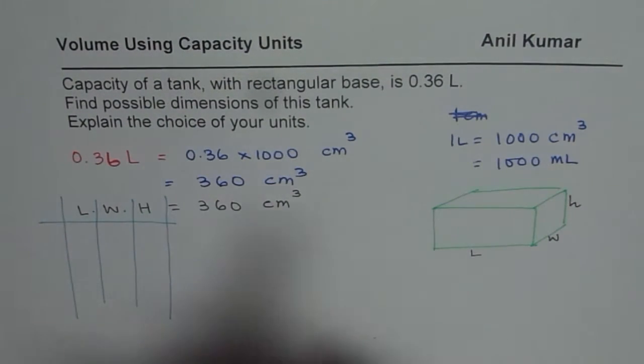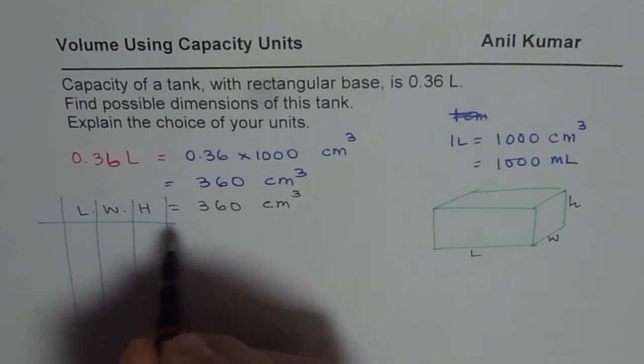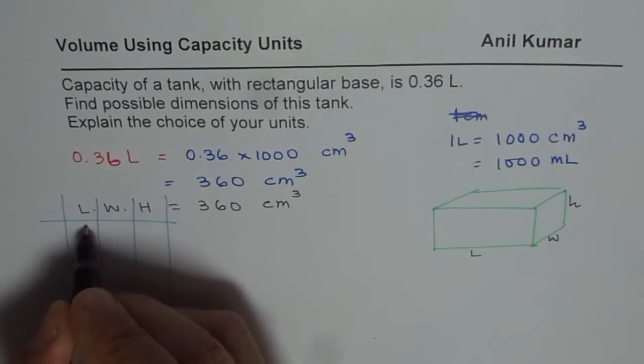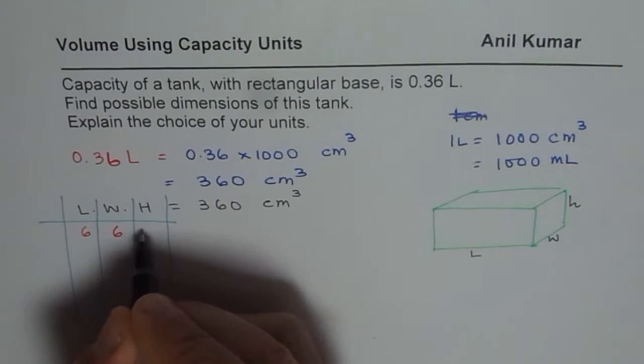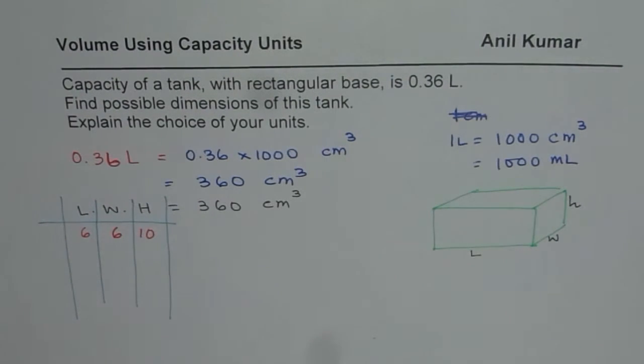So I will write down a few which when multiplied gives 360. One could be 6 times 6 is 36 times 10 is 360. You get the idea.